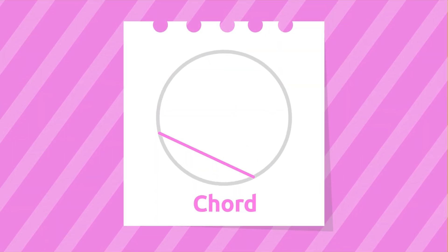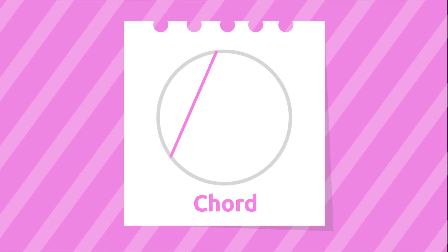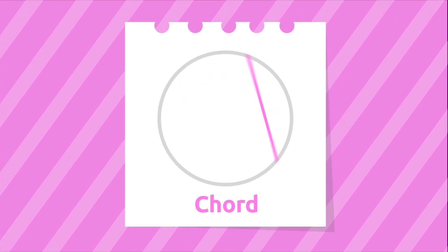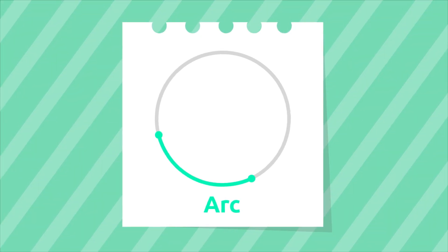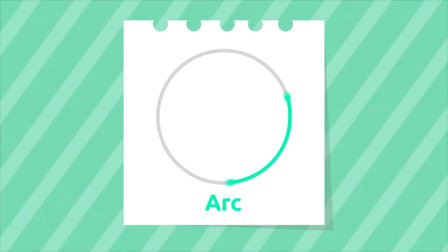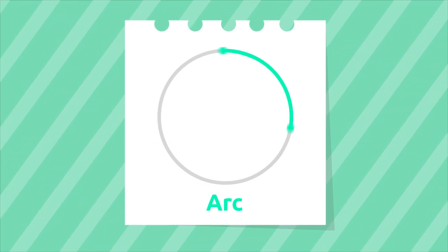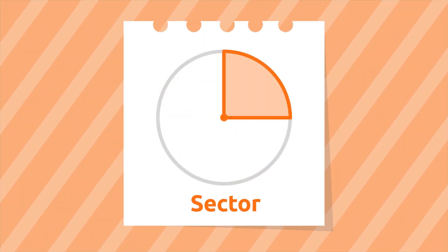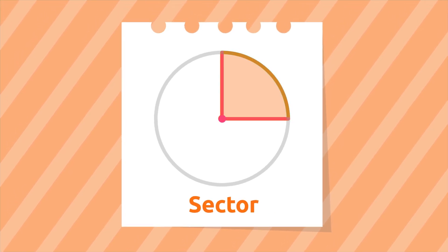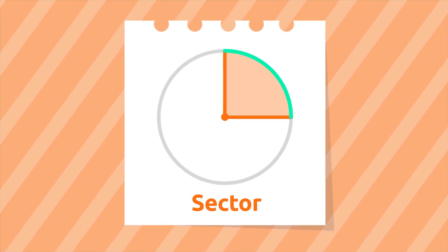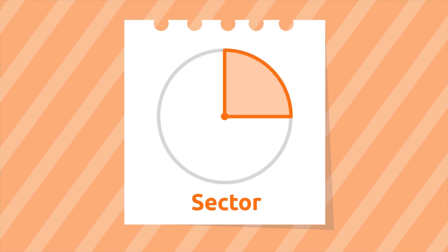The chord is the segment which connects any two points of the circumference. The arc is the part of the circumference that lies between two points. The sector is the region between two radii and their arc — look, it's a slice of pizza! Let's recap the parts of the circle and the circumference.